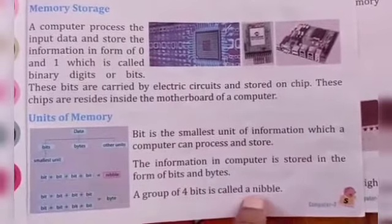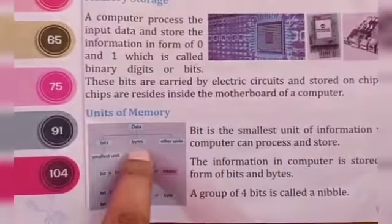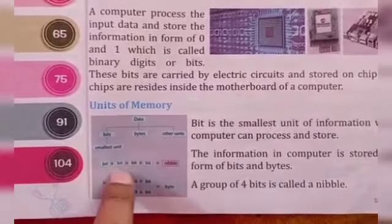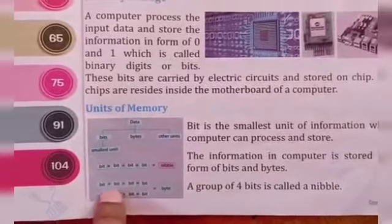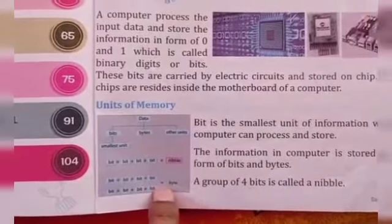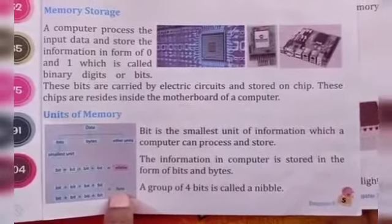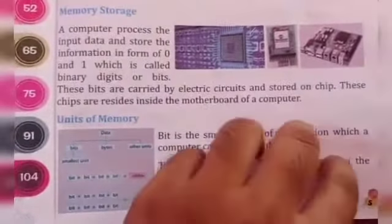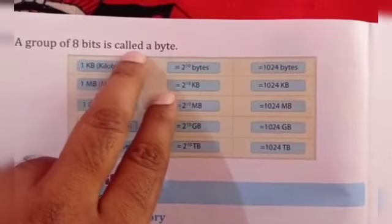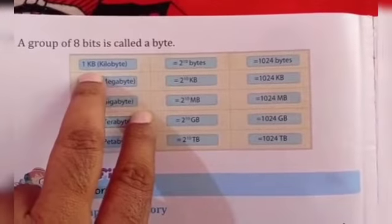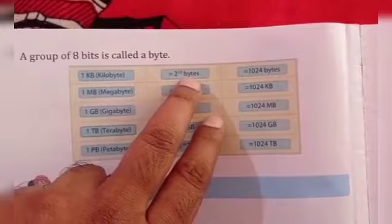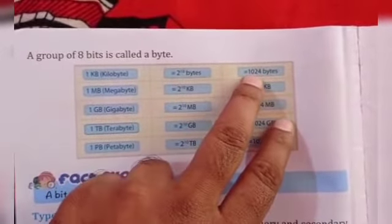A group of four bits is called a nibble — यानि 4 bits के बराबर एक nibble होता है। A group of 8 bits is called a byte — 8 bits equals 1 byte। तो 8 bit के बराबर एक byte होता है और 4 bit के बराबर एक nibble होता है।